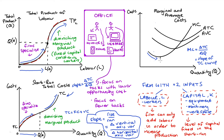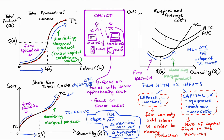In terms of the marginal cost curve, it is at Qa where marginal cost stops decreasing. After Qa, diminishing marginal product sets in and marginal cost starts increasing. This upward slope of marginal cost is linked to the TC curve increasing at an increasing rate. Across all three diagrams, the two dominant factors explaining the shape of the curves are specialization and diminishing marginal product.